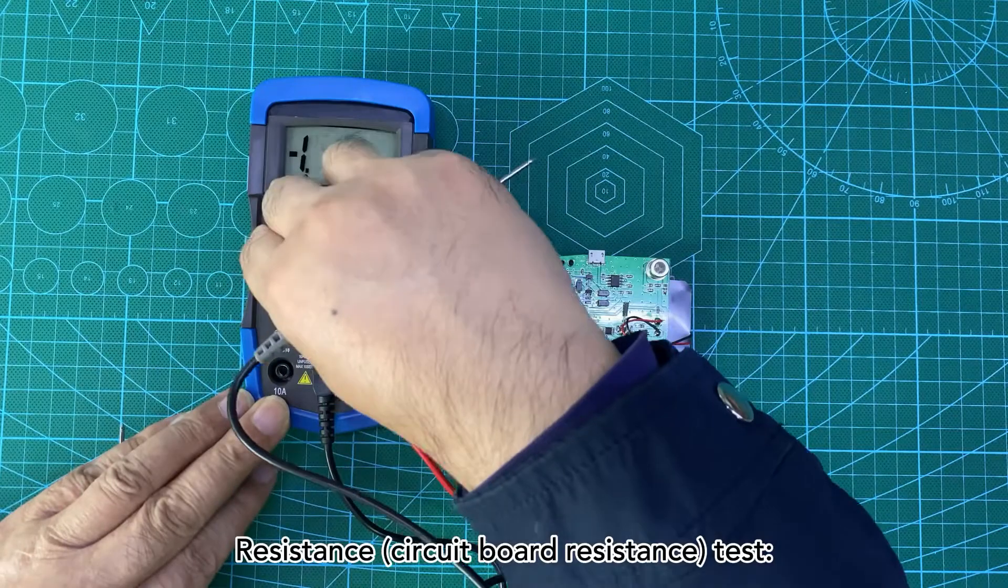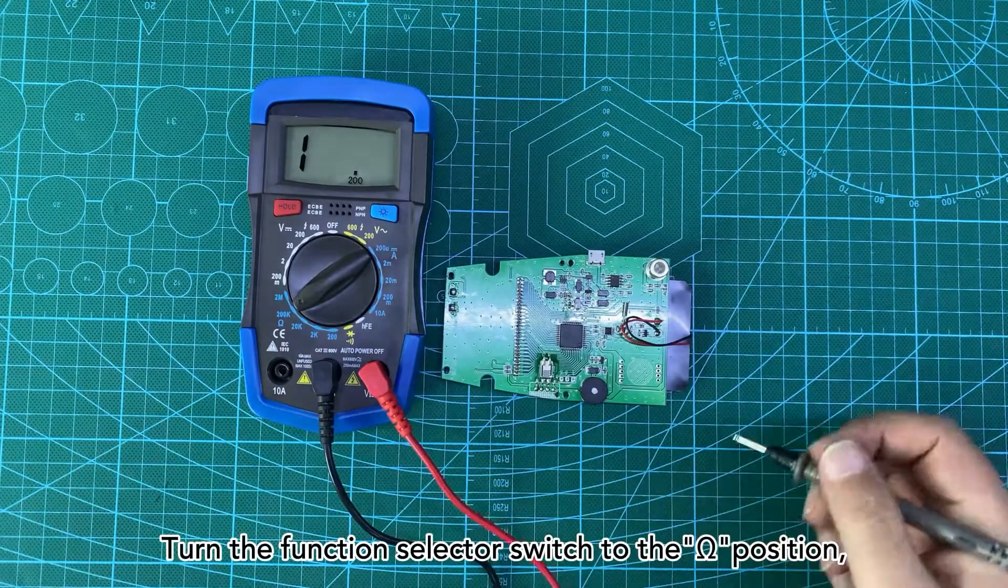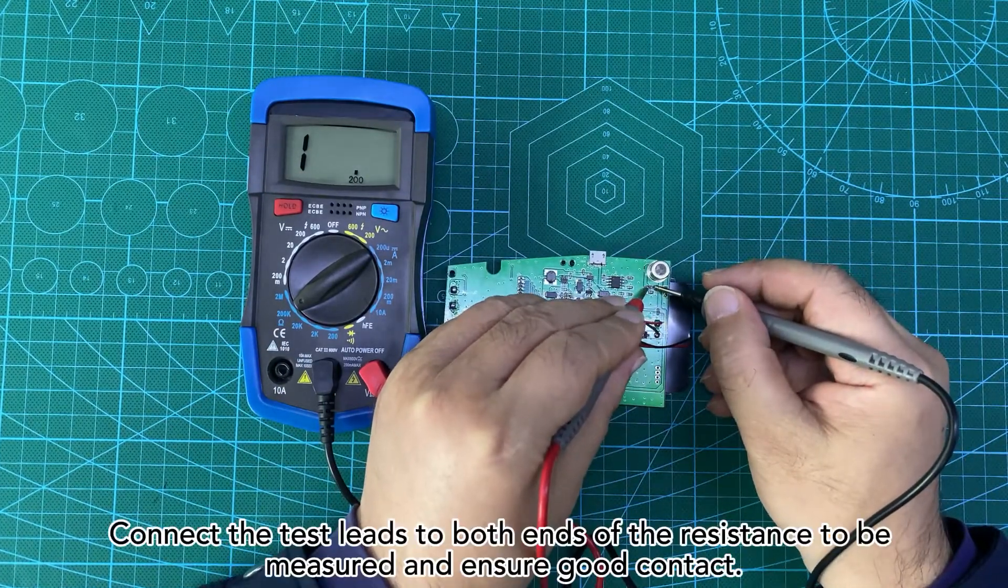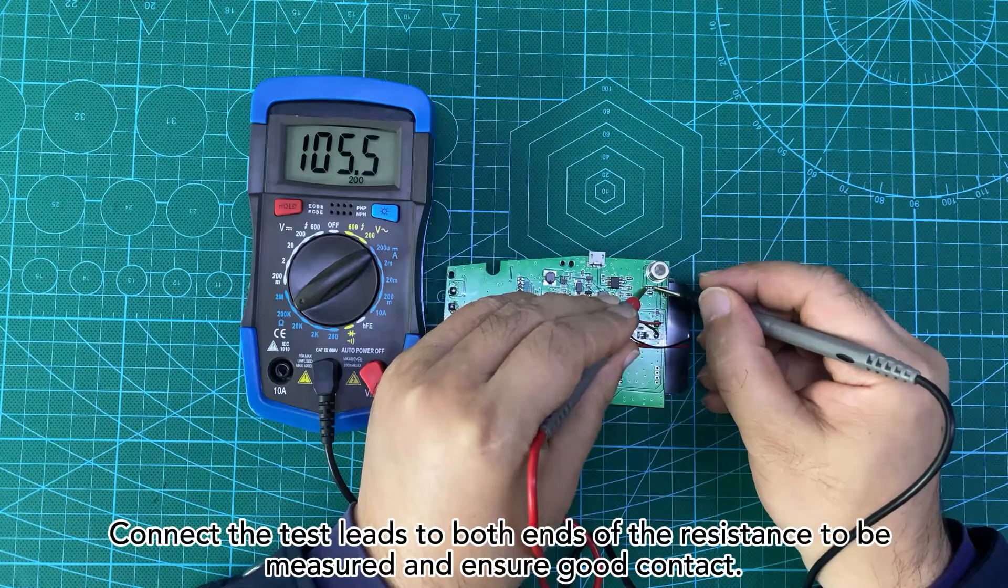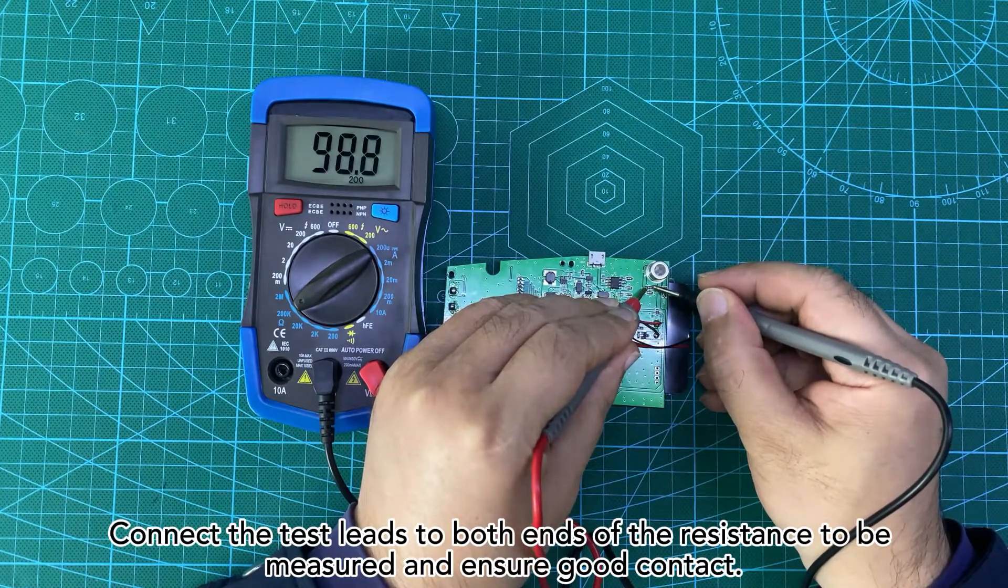Resistance circuit board resistance test. Turn the function selector switch to the Omega position. Connect the test leads to both ends of the resistance to be measured and ensure good contact.